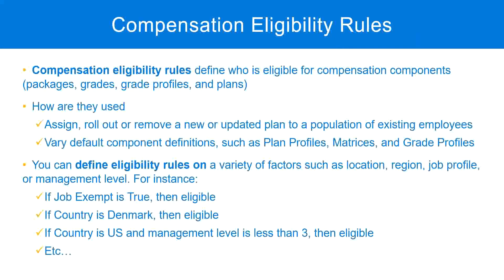What is a compensation eligibility rule and what is it used for? An eligibility rule is used to define the population of workers who are eligible for a certain compensation component. Because we will not assign compensation to each worker manually one by one, we create a rule such that anybody who satisfies the conditions defined in those rules will get that particular compensation component.